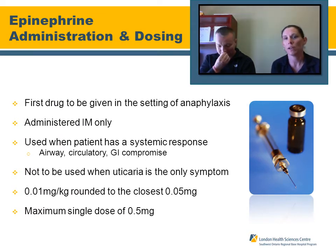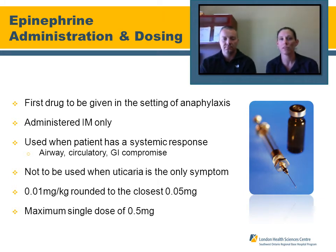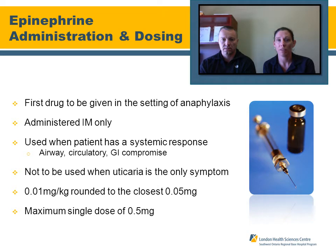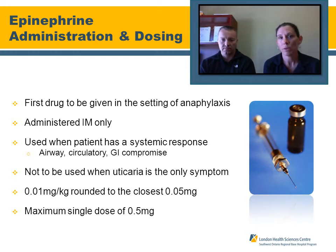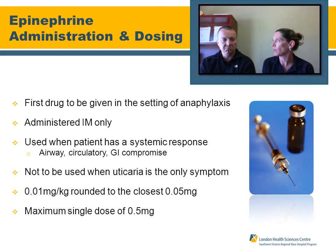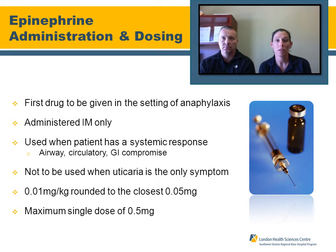Moving on to epinephrine: this is the first drug to be given in the setting of anaphylaxis. It is administered intramuscularly only — you will not be giving IV epinephrine. Signs and symptoms of a systemic response include wheezing, generalized edema, urticaria, low blood pressure, angioedema, and stridor. Dosing is 0.01 mg/kg rounded to the nearest 0.5 mg, with a maximum single dose of 0.5 mg, administered once.